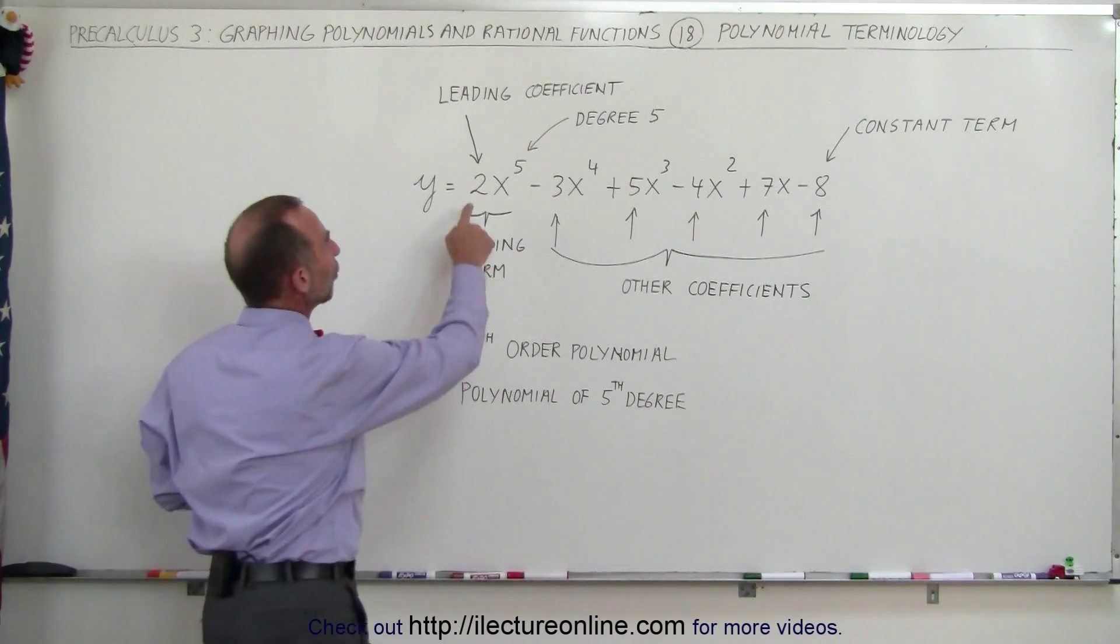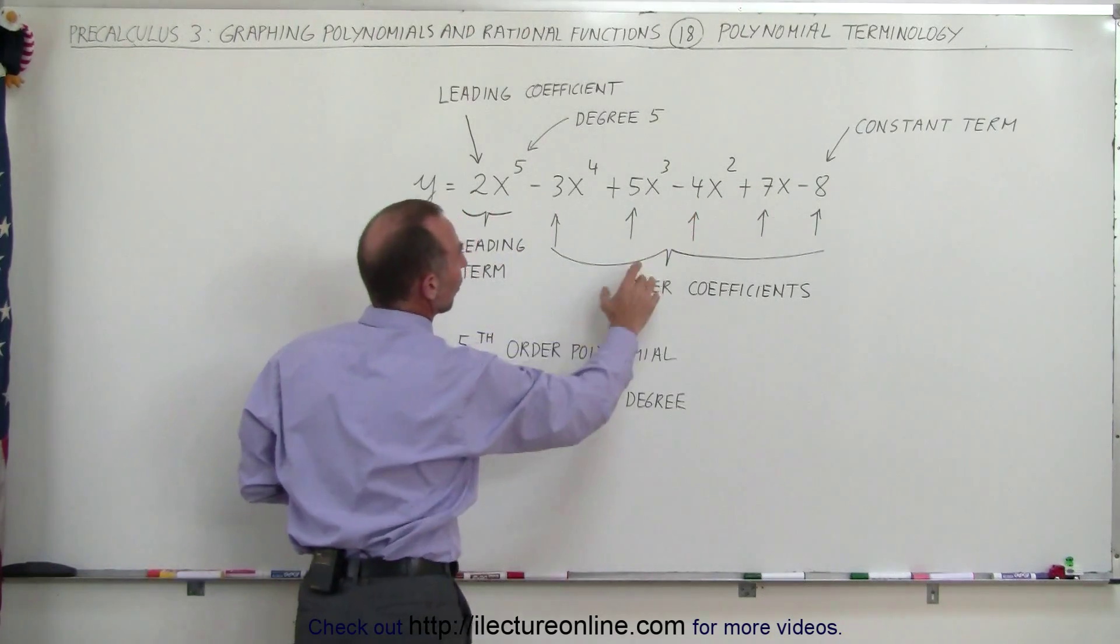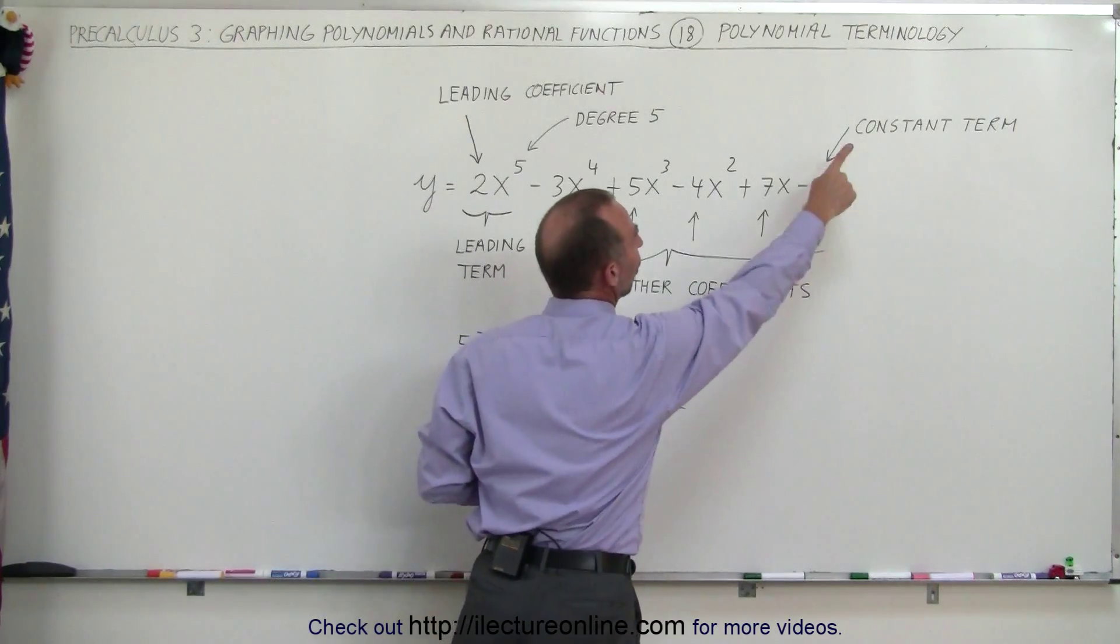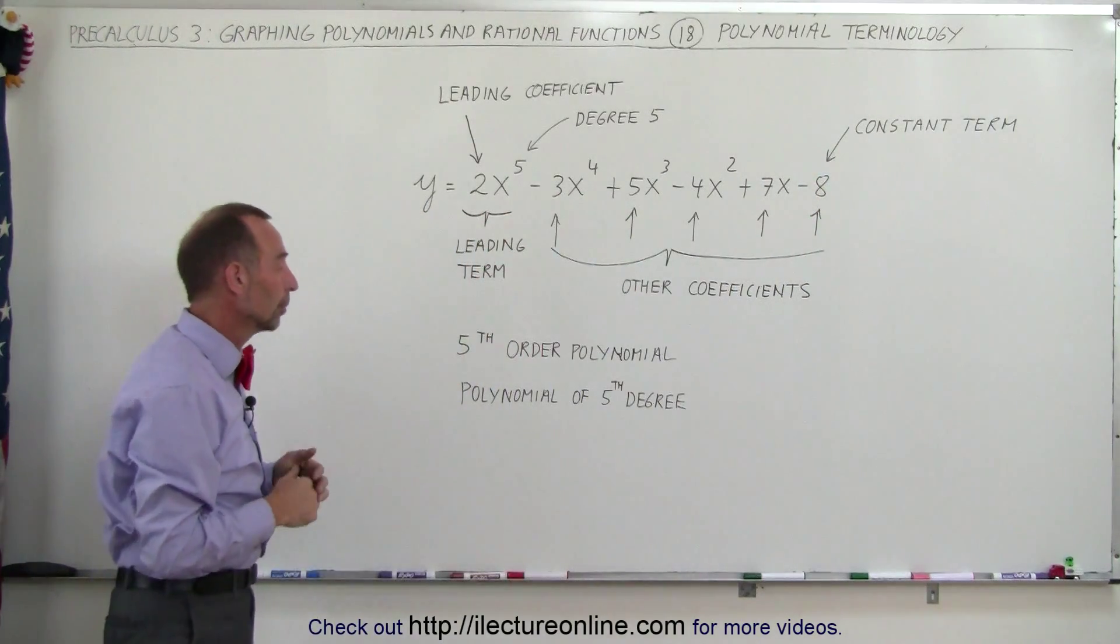You can see that we have coefficients on each of the terms, but the last coefficient is also called the constant term. It's just a simple number.